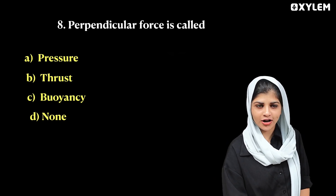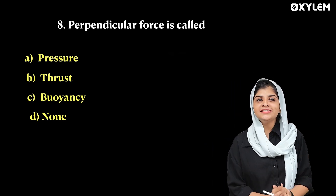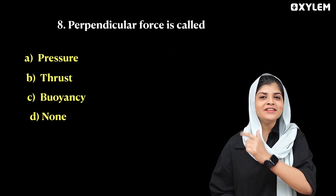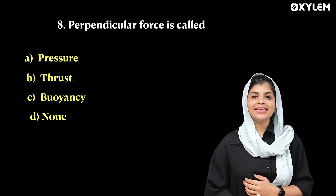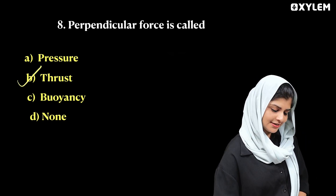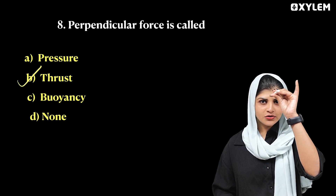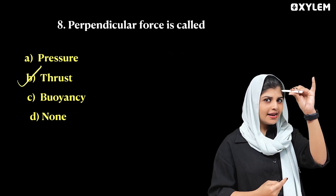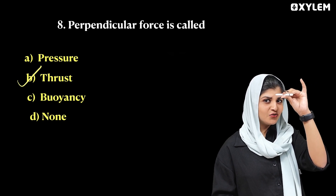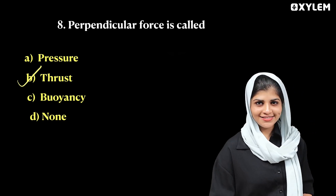Next question: Perpendicular force is called? Options are: pressure, thrust, buoyancy, none of these. A force applied to a surface perpendicularly — at 90 degrees — is known as thrust. So the answer is thrust.